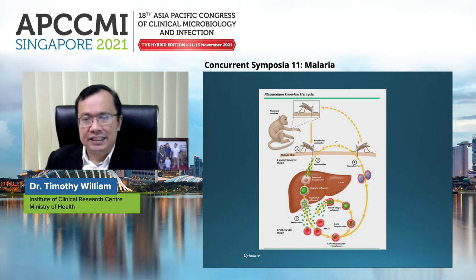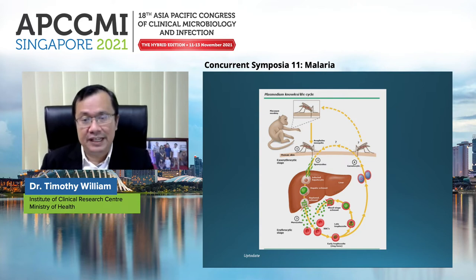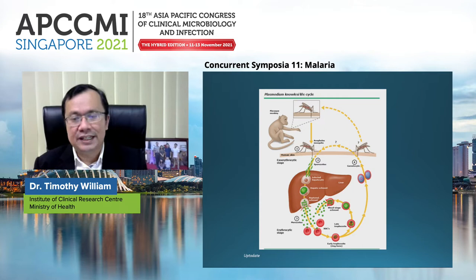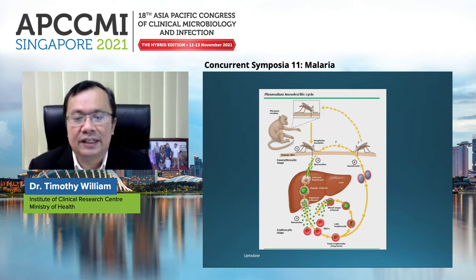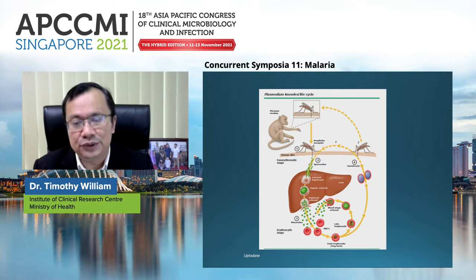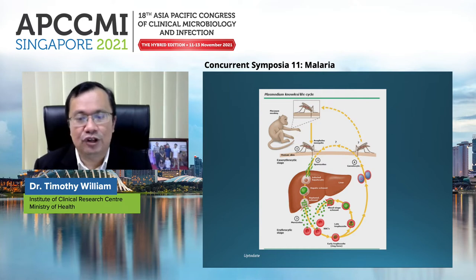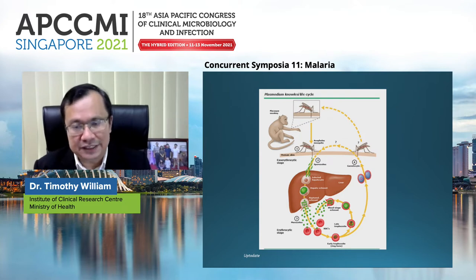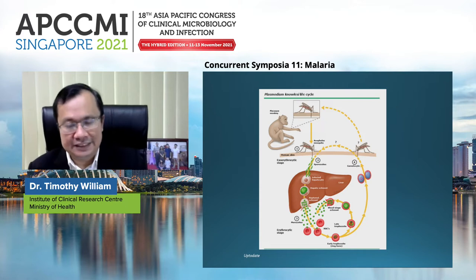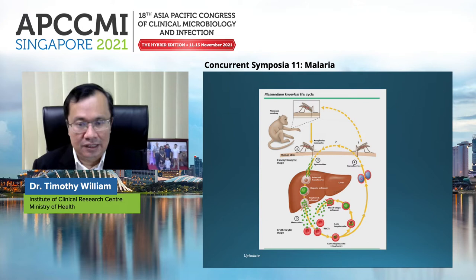This is the life cycle of Plasmodium knowlesi. It's not very different from other forms of malaria. The mosquito bites the human and releases sporozoites, which infect the hepatocyte. Within the hepatocyte, the hepatic schizont is formed, then ruptures releasing merozoites, and you go into the erythrocytic stage. The merozoites infect the red blood cells, the erythrocytic schizont is formed, then it ruptures again and infects other red blood cells. This is a 24-hour cycle, and some are formed as gametocytes, which the mosquito then transmits to other monkeys or humans.